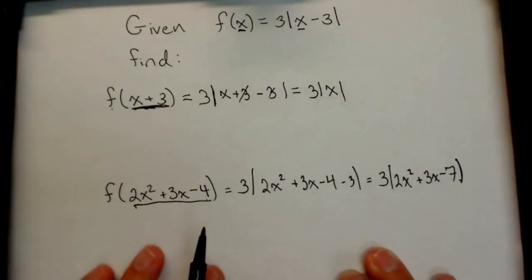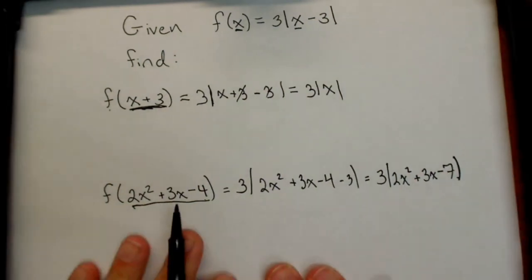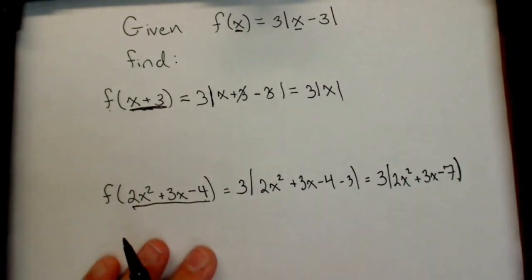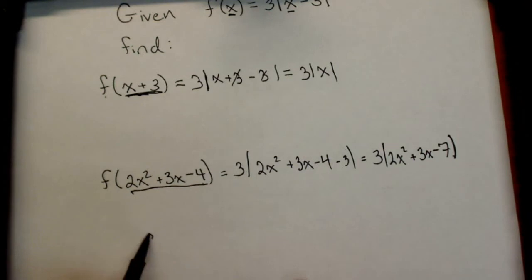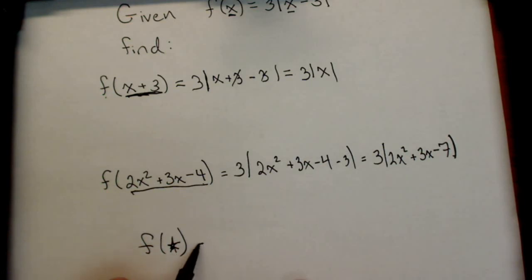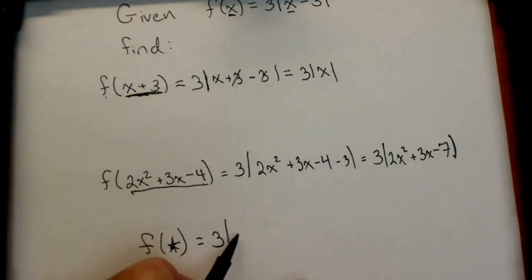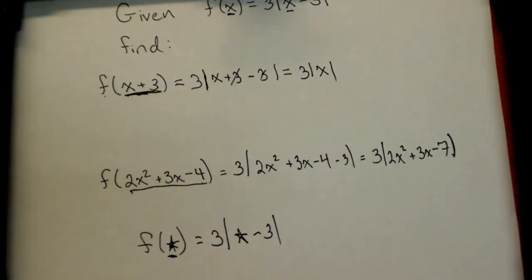It doesn't matter what goes in those parentheses; it just tells us that that's what the input is. For instance, if I wanted to find f(star), that tells me I'm using my function f, the star as an input. This would be three times the absolute value of star minus three. We have to realize that whatever is in those parentheses is our input.